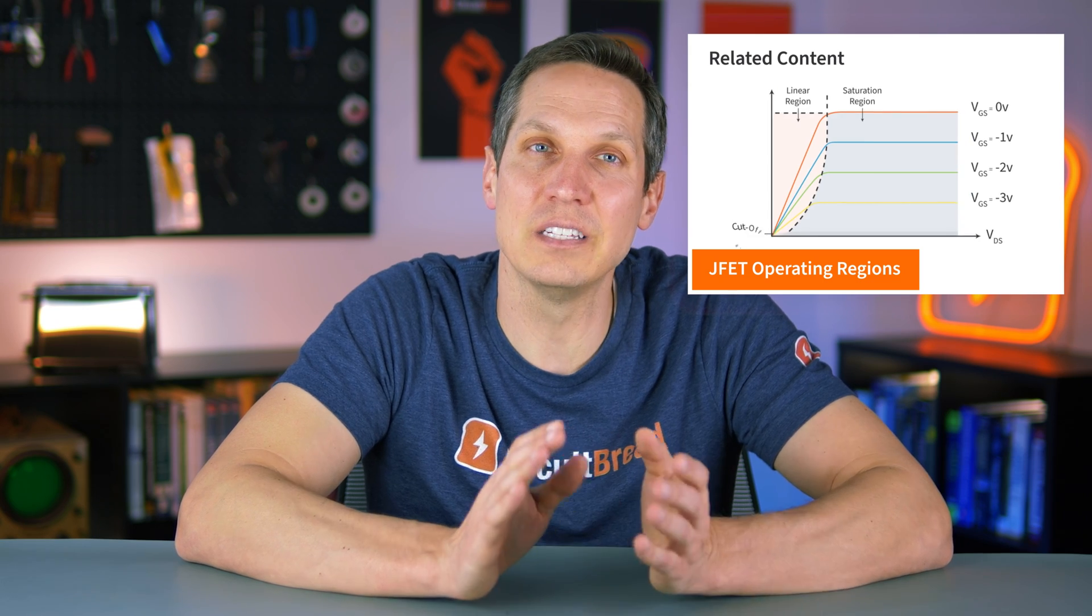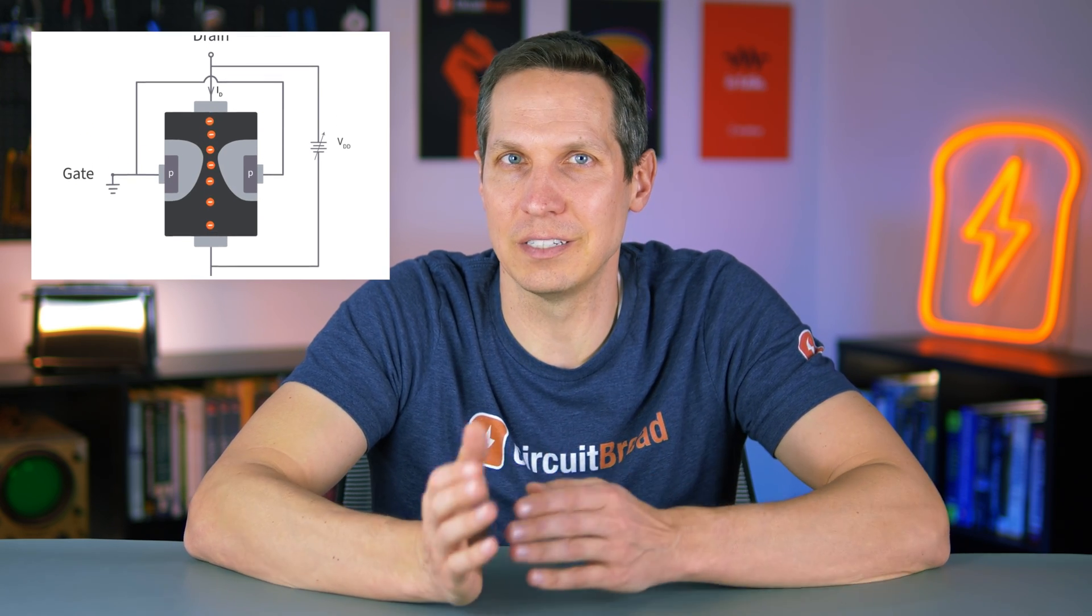We will do another video where we discuss the VI characteristics and the different operating regions of the JFET, but for now we've learned what a JFET is, what its basic symbol looks like, the basics of how it works, and what the internal structure looks like both when there is no current flowing and also when it is conducting.